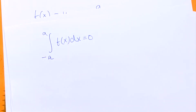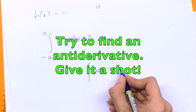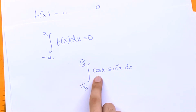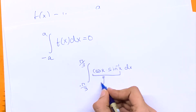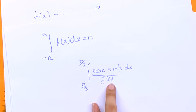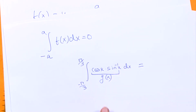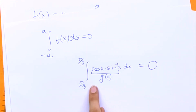Using this property, we can find some interesting integrals. Consider the integral of cos(x) · sin⁻¹(x) dx from -π/3 to π/3. cos(x) is an even function and sin⁻¹(x) is an odd function; the product of an even and an odd function gives another odd function. Calling this g(x), since g(x) is odd, the area from -π/3 to 0 and from 0 to π/3 are equal in magnitude but opposite in sign, so they sum to 0. We can evaluate this trigonometric integral without even computing the anti-derivative.